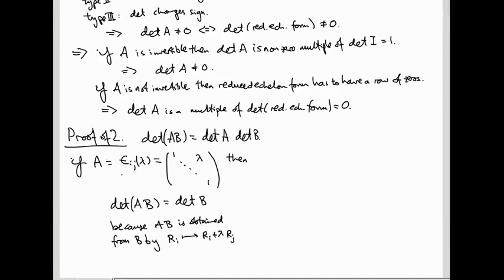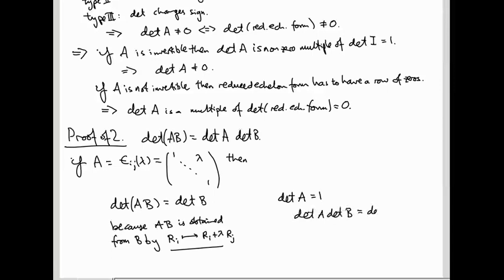Remember, this is the point of the elementary matrices: if you multiply on the left by E_ij(λ), that has the effect of doing this row operation. And we've seen that doing this row operation doesn't change the determinant. On the other hand, det(A) — the determinant of this elementary matrix — is just the product of the diagonal entries, which is 1. So det(A) det(B) is also equal to det(B). By computing both sides of this equation we see that the equation holds. So the formula is verified when A is a type 1 elementary matrix.